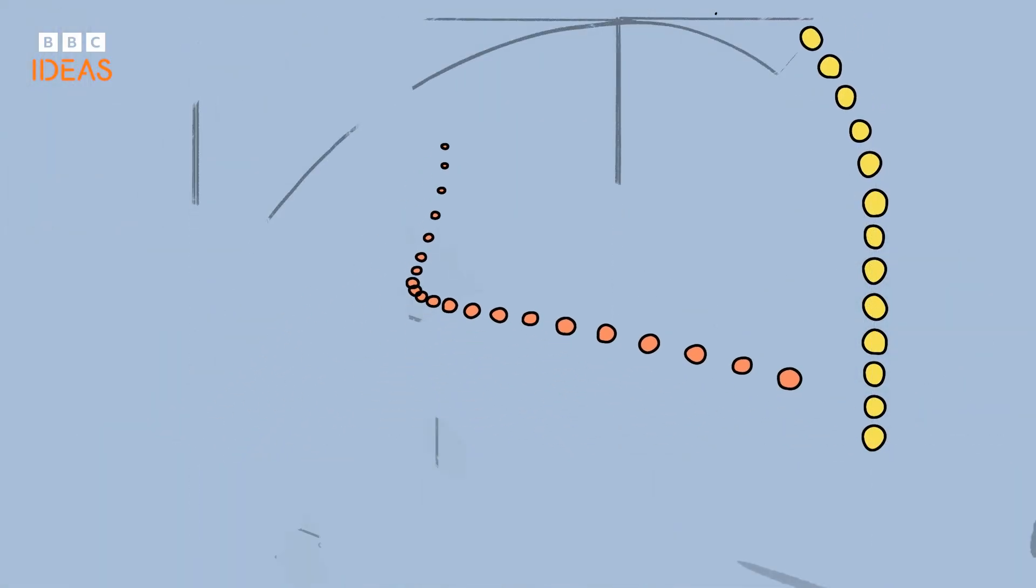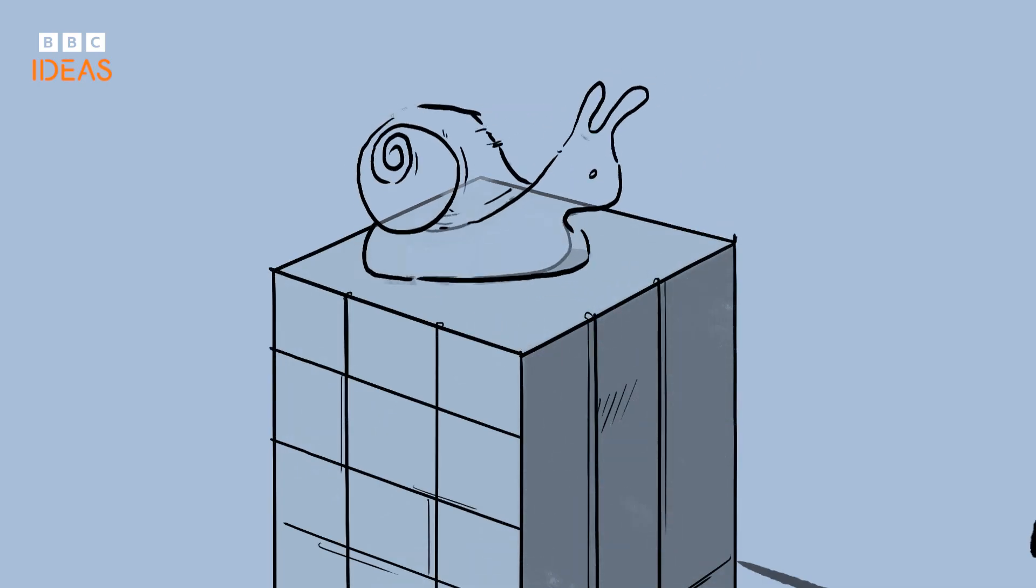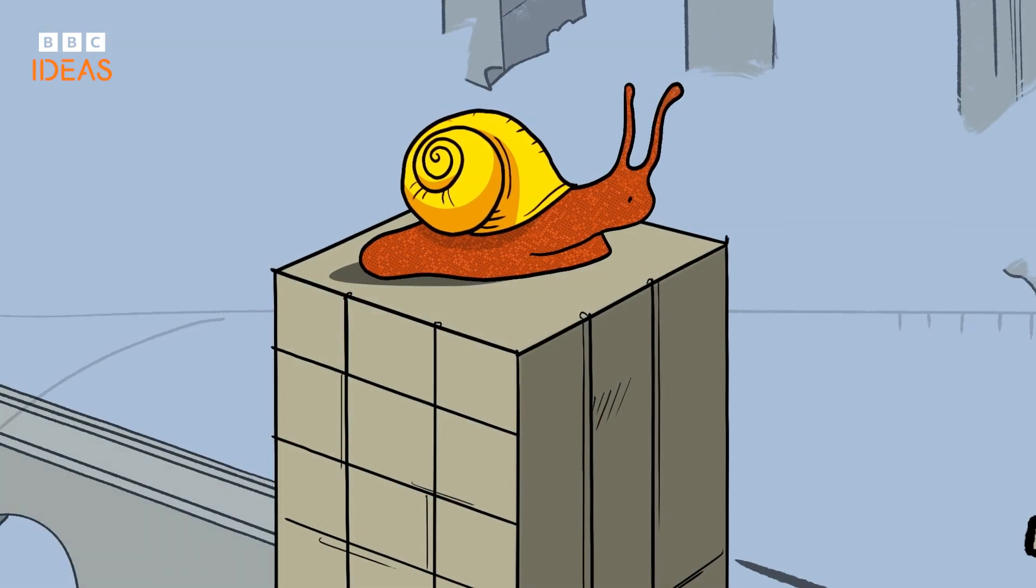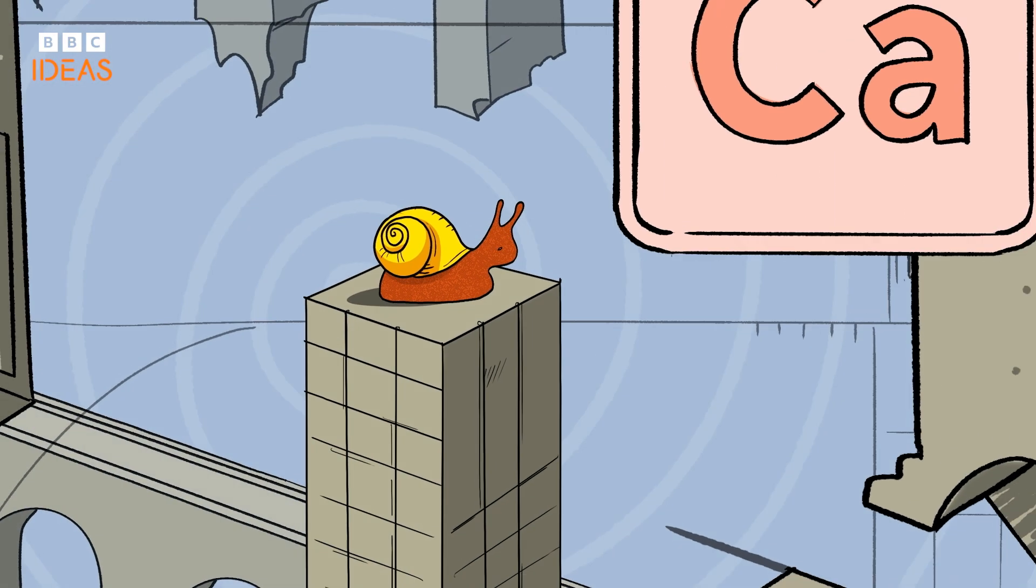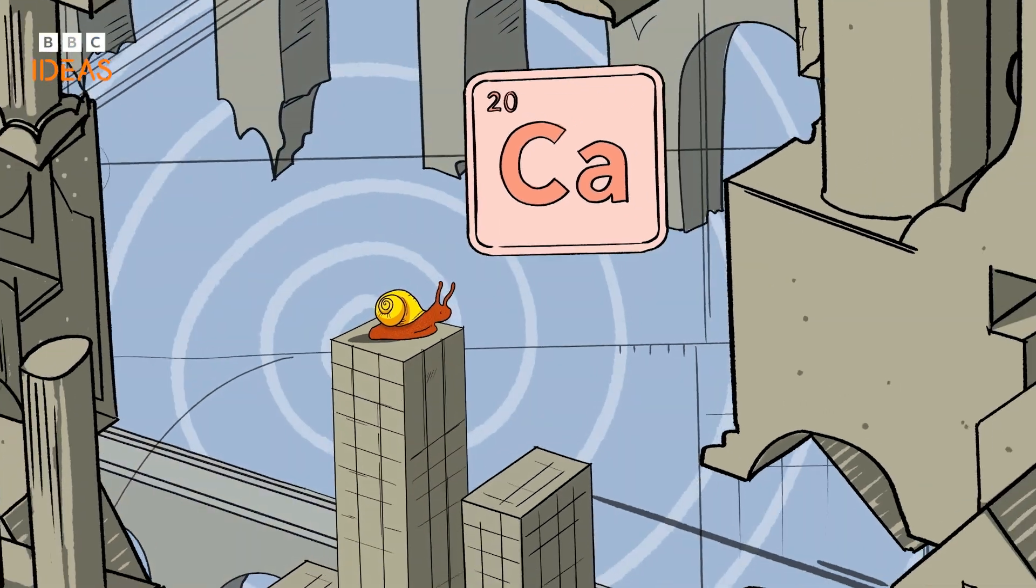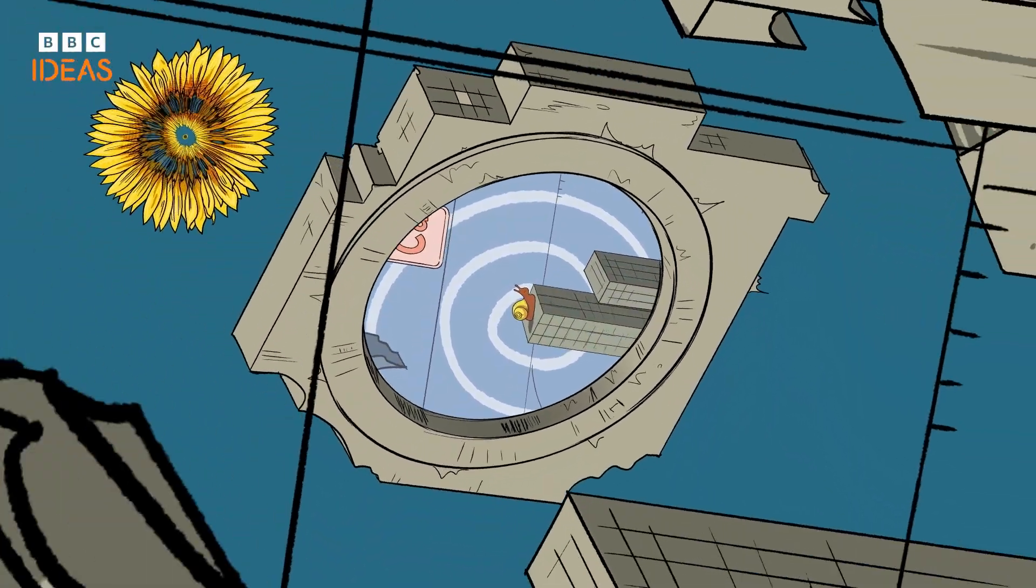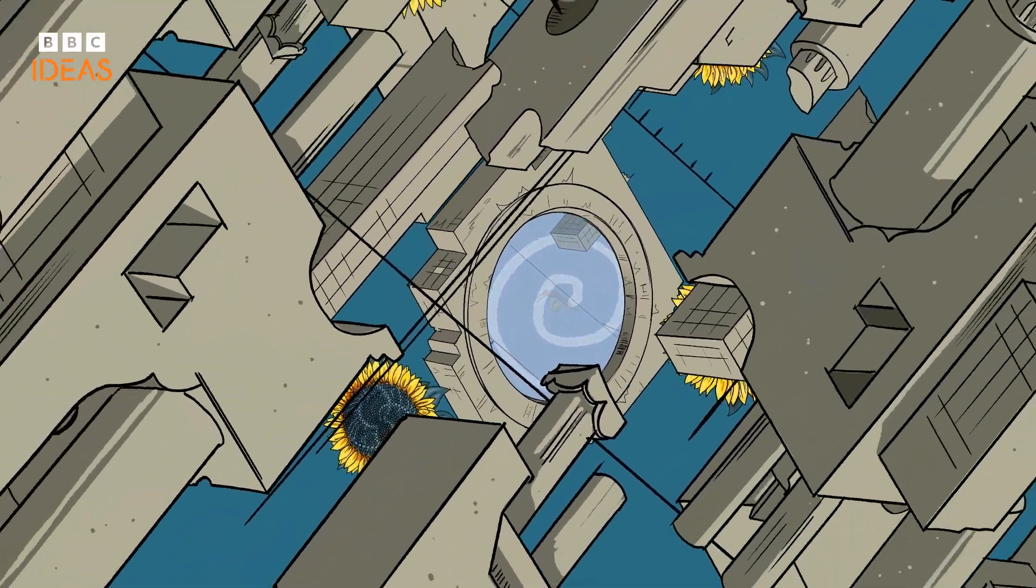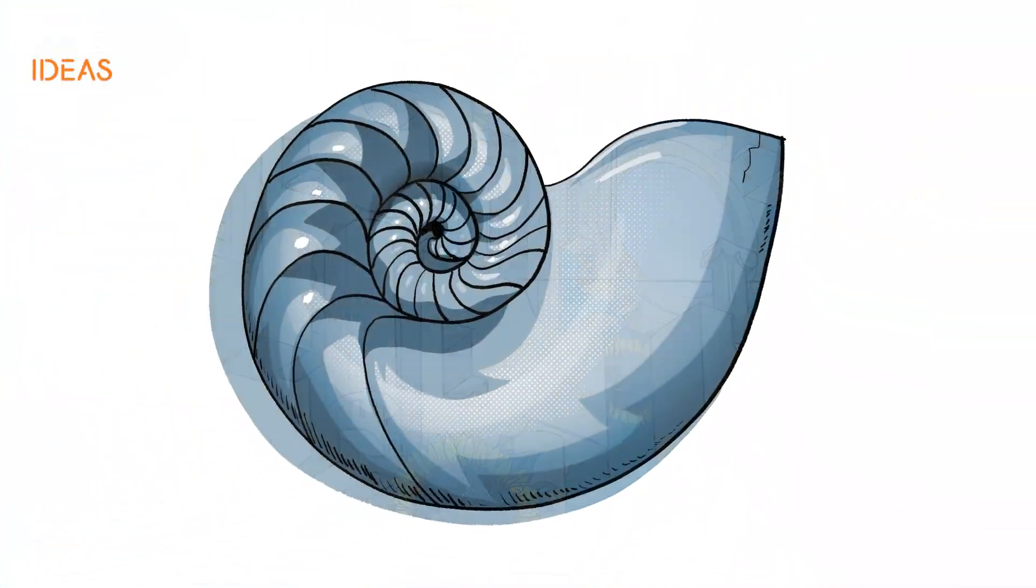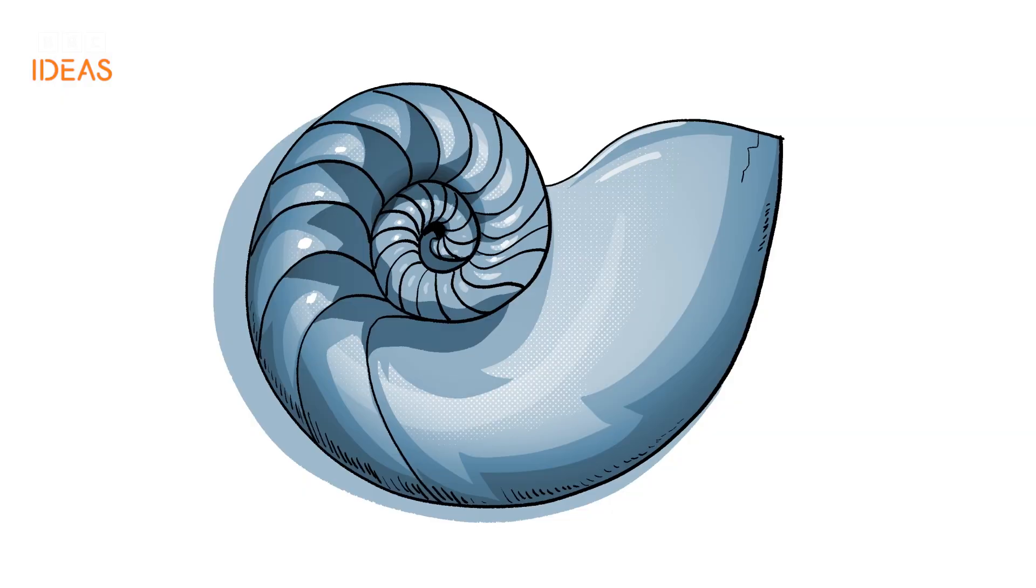But nature is not always so obliging. Snails, for example, grow their shells at a rate dependent on how much calcium is available, not according to the golden ratio. There are many spirals in nature and some of them are very mathematically interesting. But just because something is a spiral does not mean it's a golden spiral.